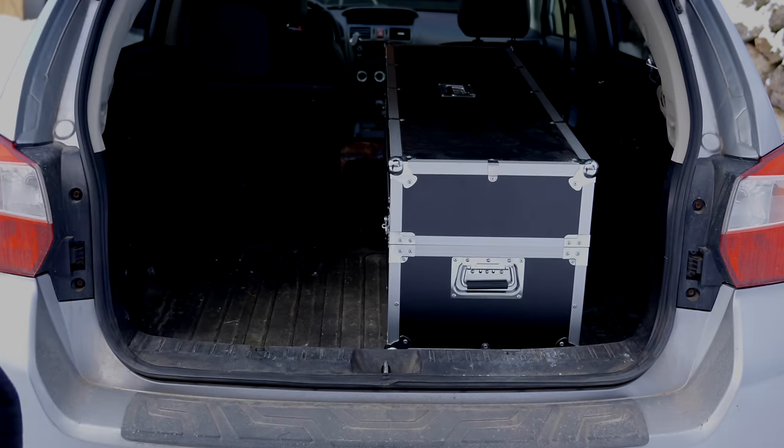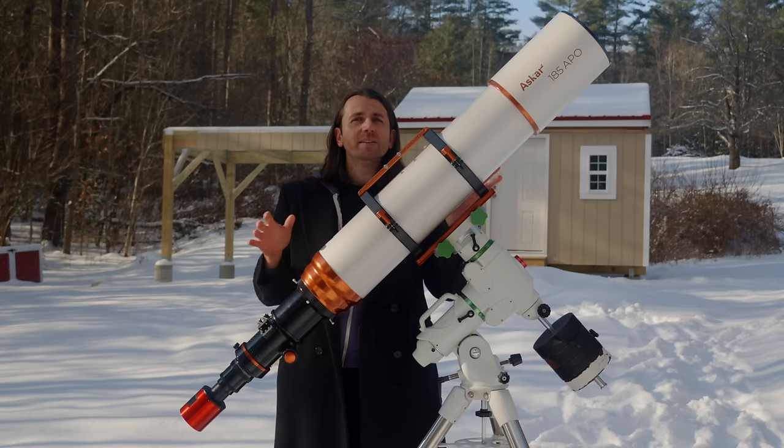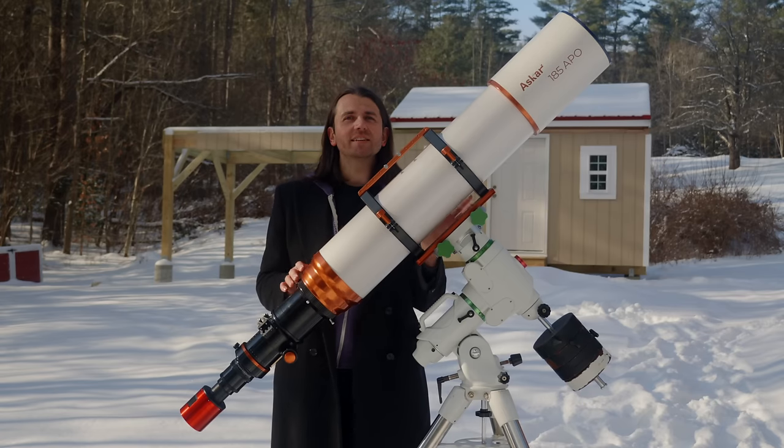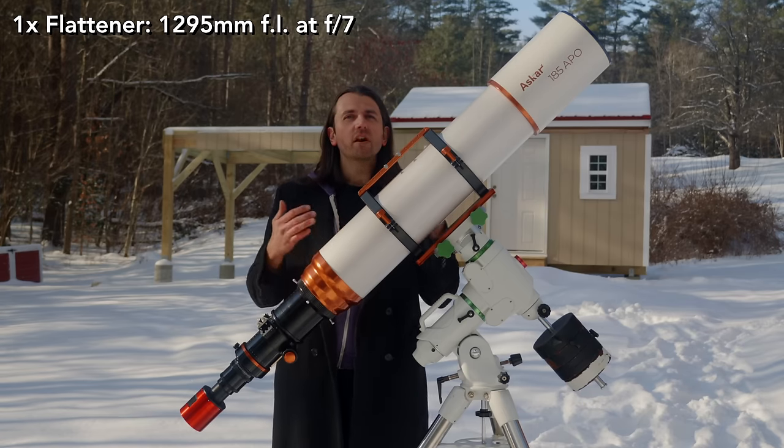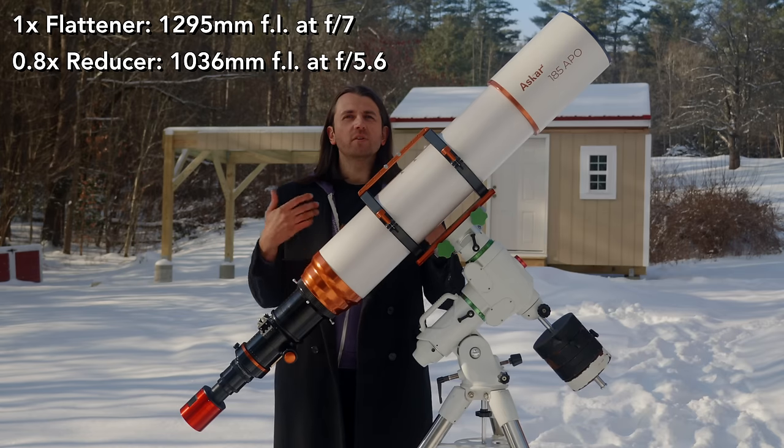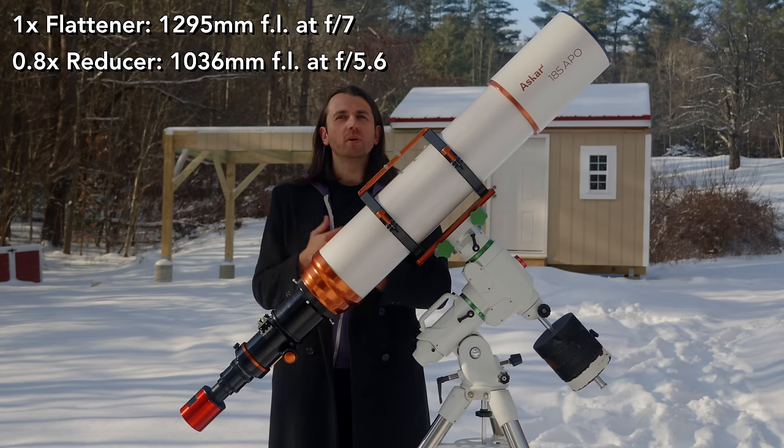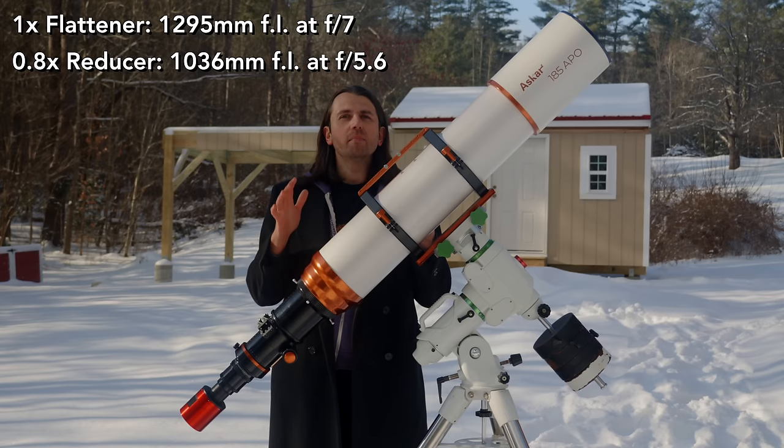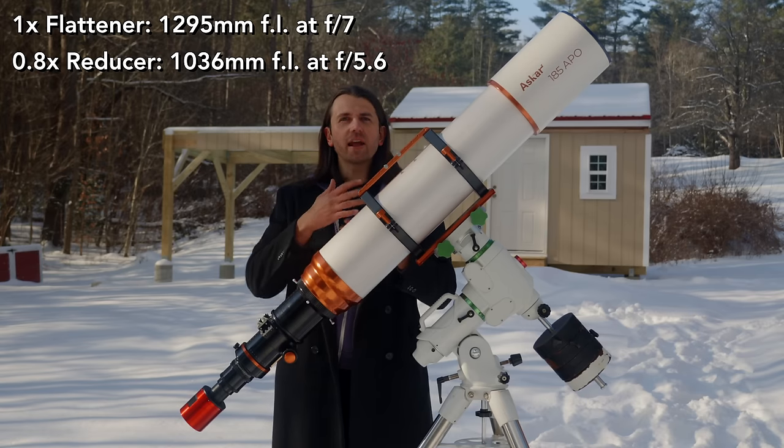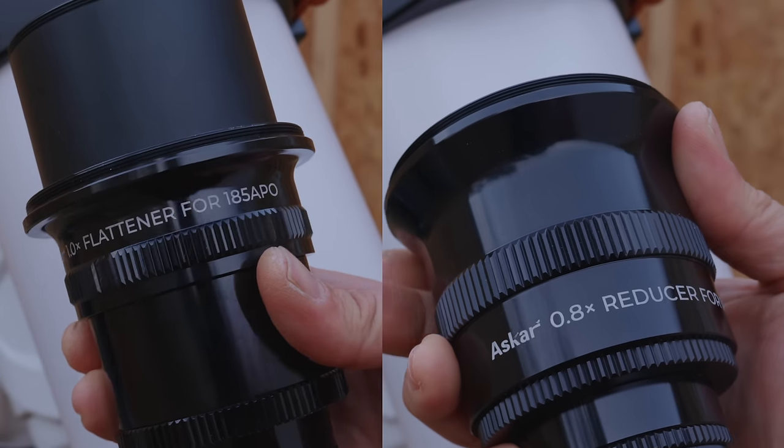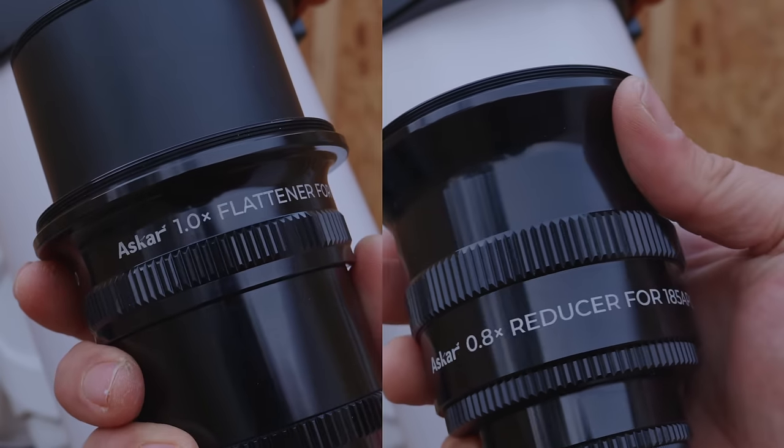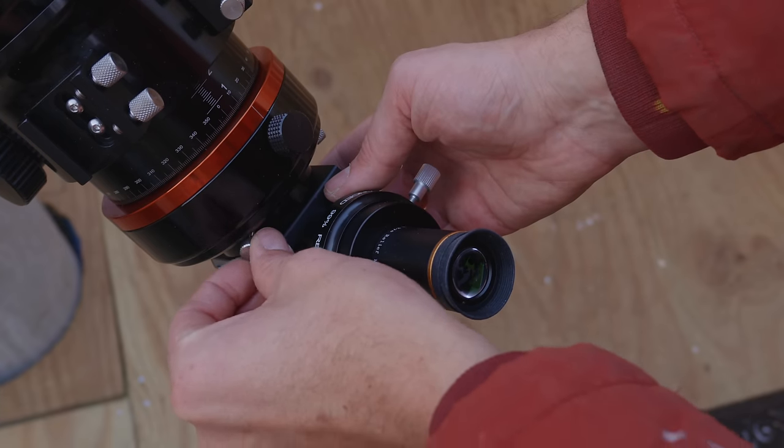The specifications for imaging on this are 1295 millimeter focal length at f7 with the 1x flattener, 1036 millimeter focal length at f5.6 with the 0.8x reducer. Both of these, the flattener and the flattener reducer, are optional, they're 300 each. You're going to want to pick up at least one if you're doing imaging. If you're using it as a visual telescope you won't need those which is why they're optional.